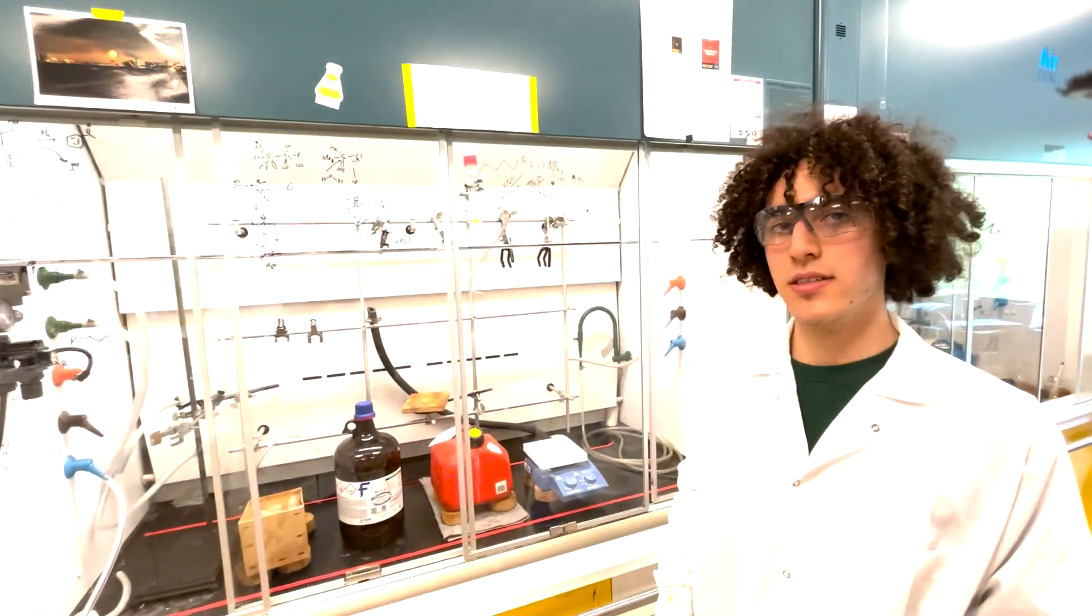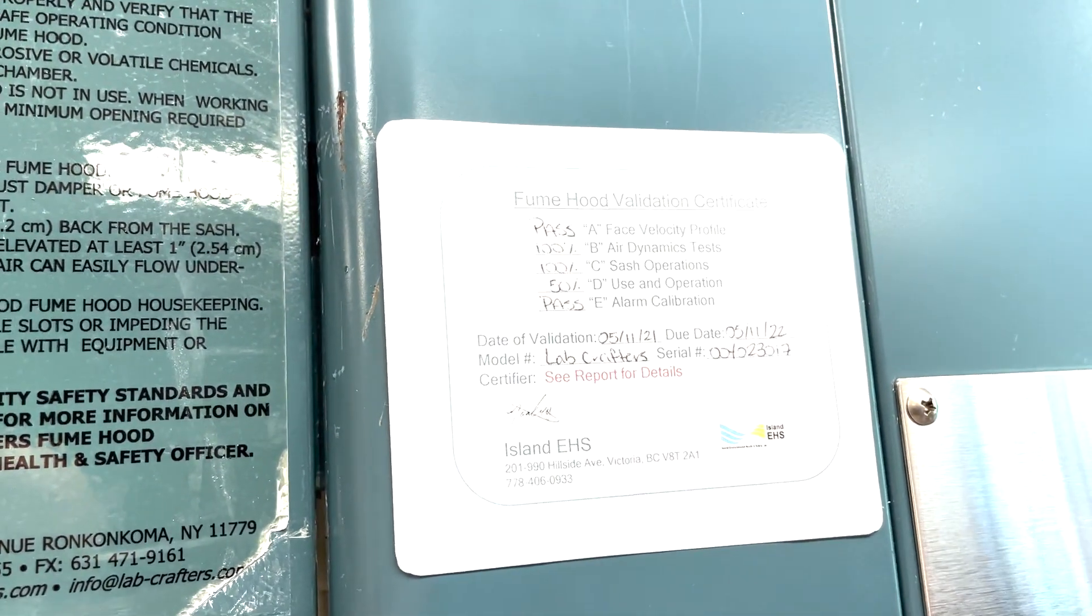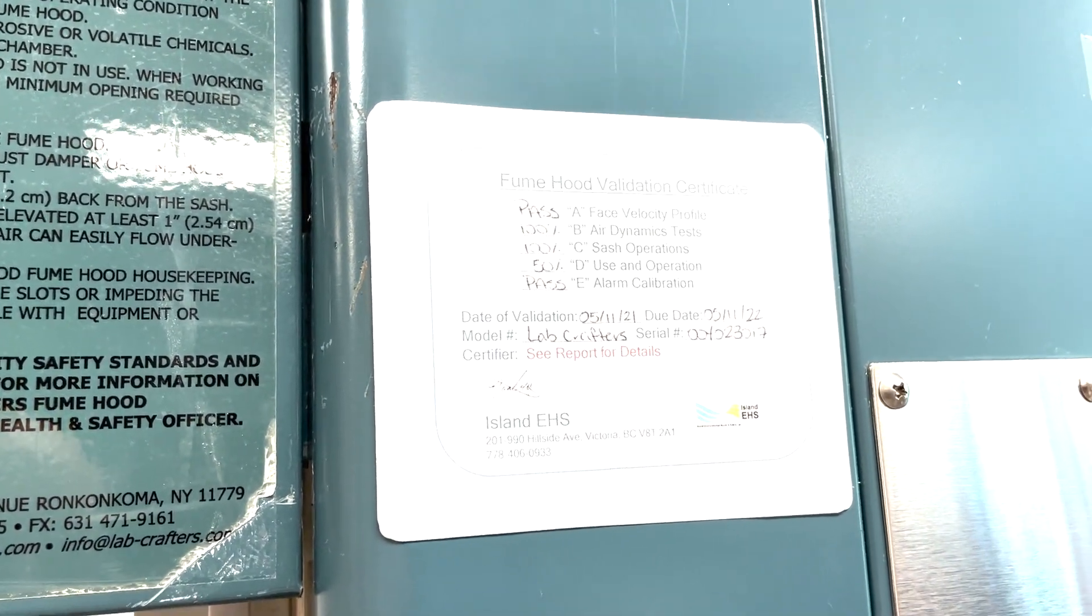Fume hoods here at UVic are tested annually for their effectiveness and that is shown by this certificate. On that certificate, you get a date of validation and a date for the next inspection.